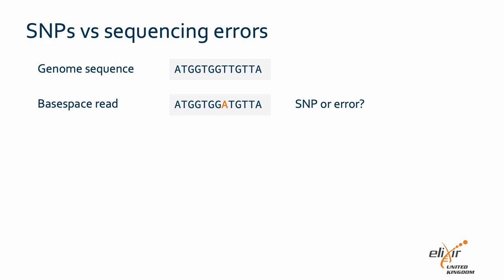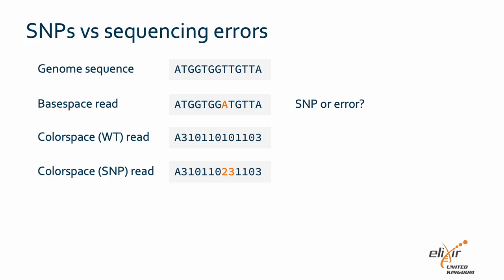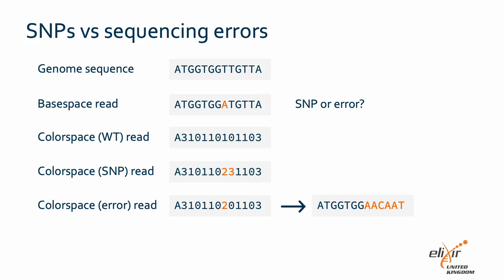With a base space read, a single polymorphism could be real or could represent a sequencing artifact. At a per-read level, there's no easy way of telling the difference if the PHRED score is acceptable. With color space, a genuine SNP results in two color space values changing — the SNP and the following base. If a sequencing error were included, only a single value would change relative to the reference, and all the following converted sequence would not match the reference. This was theoretically a very important advance, but was limited by generally high rates of sequencing errors, which affected color space more systemically than base space, and the rapid improvements in sequencing by synthesis approaches such as Illumina, which quickly reduced error rates.